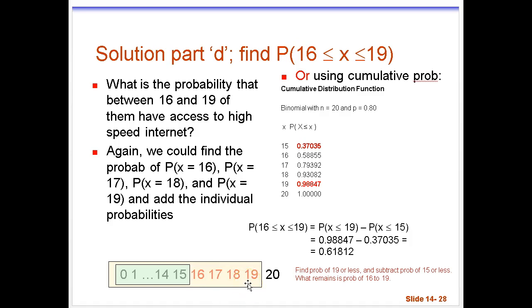Now the way you can do this one, the faster way to do it, is to take your bigger number, which is 19, and find the probability of 19 or less. That's what I've got right here. Find the probability of 19 or less and that answer is right there.